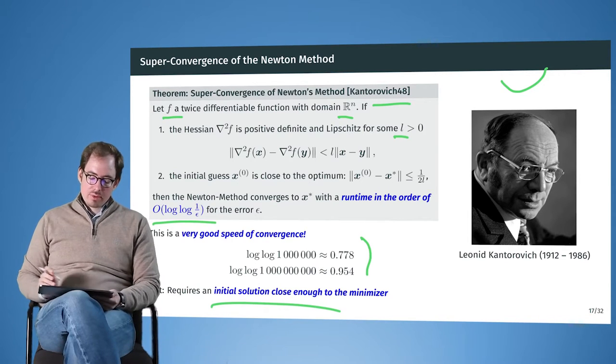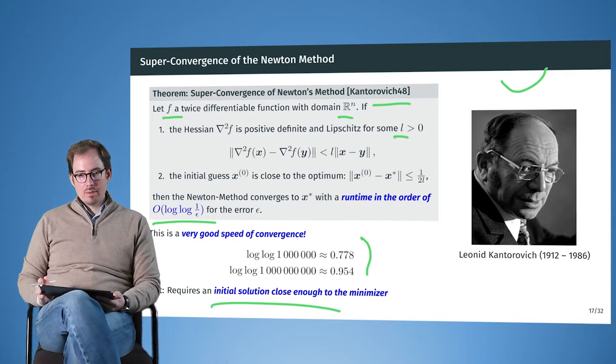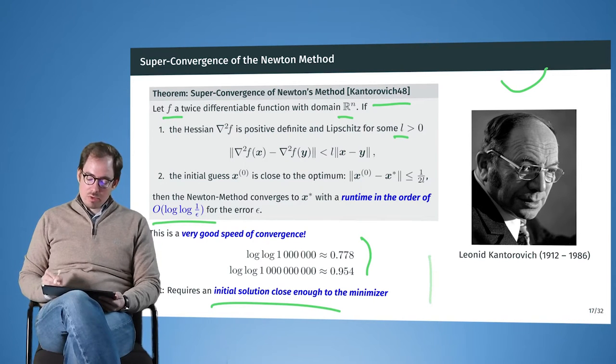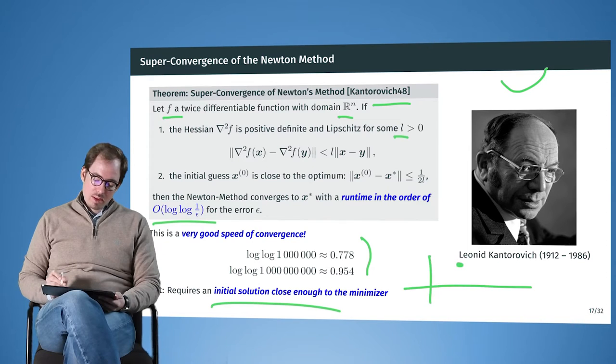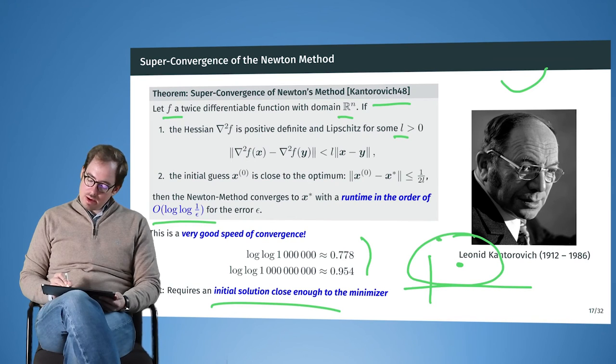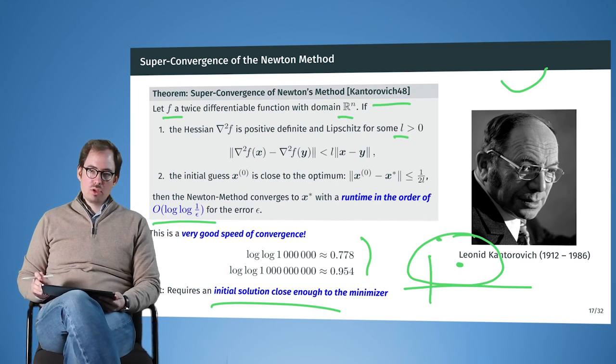But, however, we need to be close enough initially to achieve the super convergence. So you can think of this like a basin of super convergence. So here we have our minimizer, and there's this basin of super convergence around that. And if we find our way into the basin of super convergence, then the Newton method, in just a few steps, will converge to the...